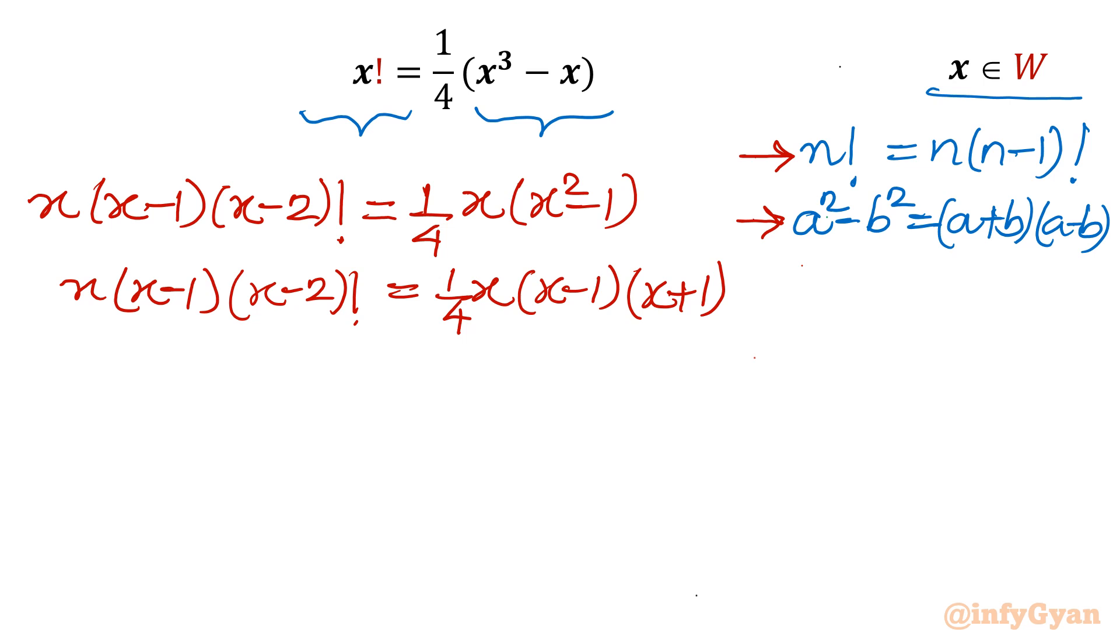Now you can see we can cancel x and x minus 1 from both sides, but we have to be sure that it should not be the solution of the original equation. So if you will check x equals 0 and 1: for x equals 0, left hand side is 0 factorial equals 1, right hand side is 0, so it's not true. For x equals 1 also, left hand side is 1 factorial equals 1, right hand side is 0. So I can divide both sides by x times x minus 1, and write x cannot be equal to 0 and 1.